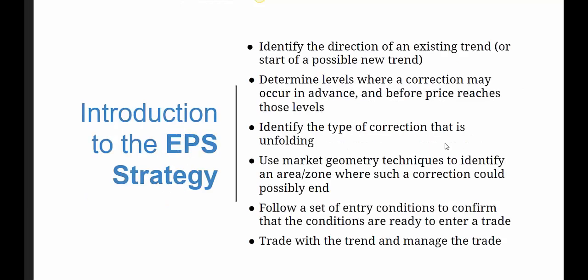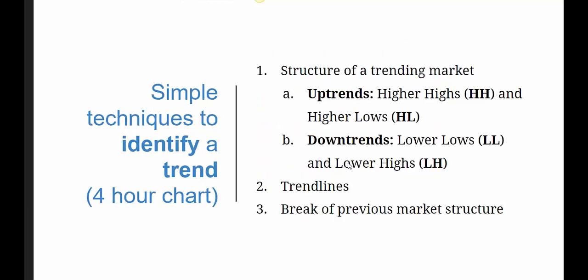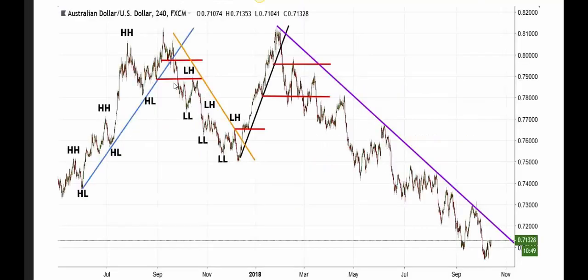Then when price actually reaches an area of market geometry, I follow a set of entry conditions to confirm that conditions are ready to enter a trade, and once everything has fallen into place I will enter a position. The trend is your friend — I want to be trading in the direction of the trend. For point number one — how to identify the direction of the trend — I pull up my four-hour chart. An uptrend is created by higher highs and higher lows; a downtrend by lower lows and lower highs. I use trend lines to define the trends and horizontal lines for previous market structure.